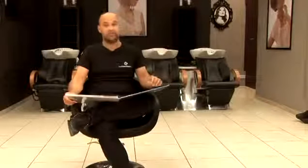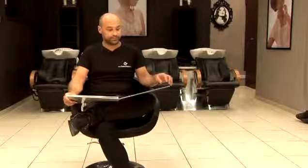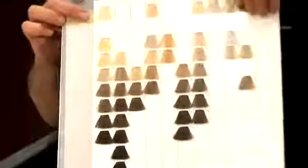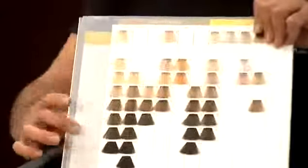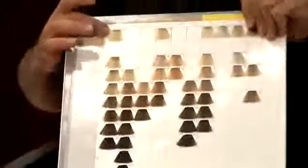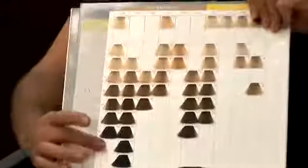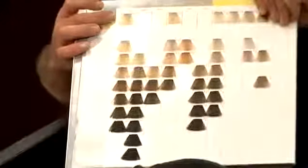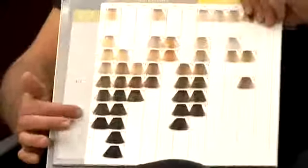The first thing you need to do is determine your natural base. At ColourNation we use Weller colors and it's a numbering system which goes from number 2 right through to number 12. Number 2 being your black up through your browns into your blondes and palest blondes. All our natural hair colors will be in this spectrum somewhere.